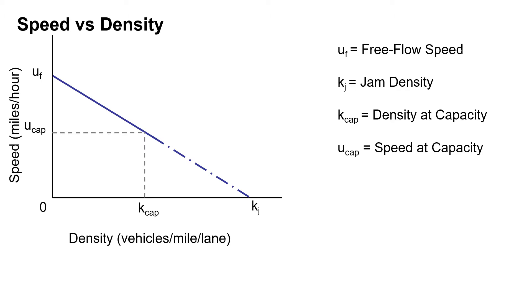We're going to start with looking at speed versus density. The three components we have are speed, flow, and density. This linear relationship between speed and density is what primarily defines the Greenshields model, and it's important for the calculations that we use for these types of problems. We're told that we have our free flow speed of 60 miles per hour and our jam density of 140 vehicles per mile, and we have a linear relationship between these two points.